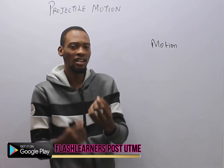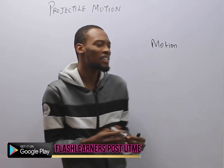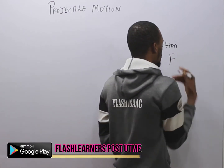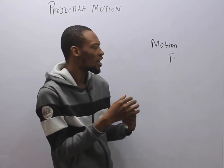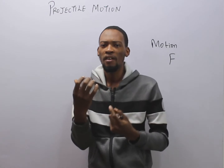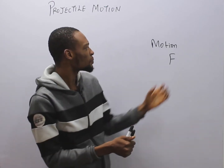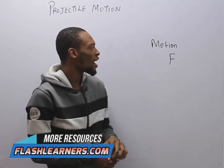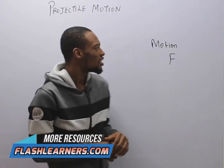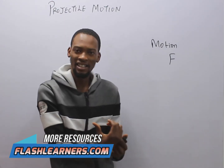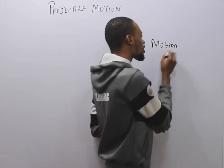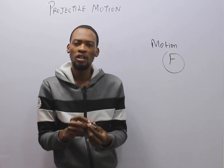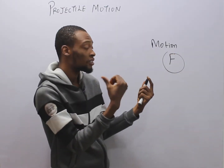I also explained that the cause of motion is force. Force is what causes objects to move or change direction. While explaining force, I introduced Newton's laws of motion, because you cannot explain force and motion without talking about Newton's law. The first law states that a body at rest will continue to be at rest, and if it is in motion, it will continue in that state of uniform motion unless a force acts on that body. The first law is referred to as the law of inertia.